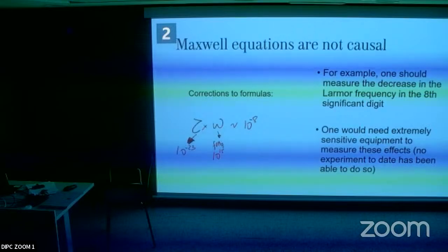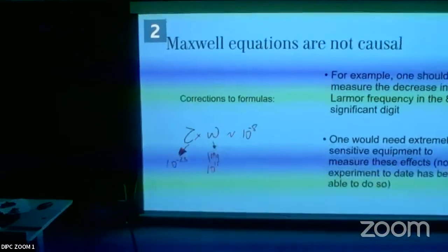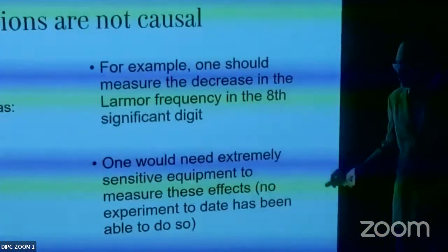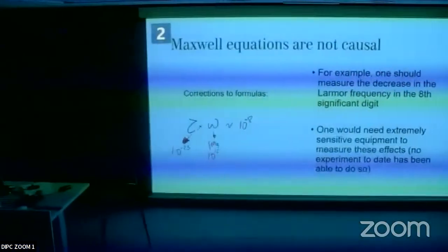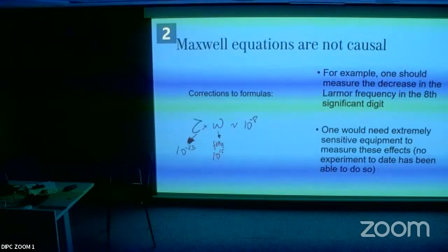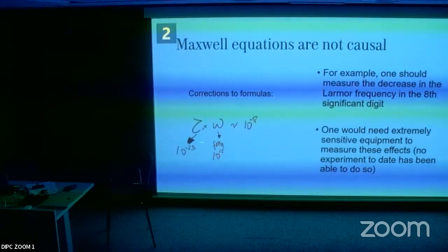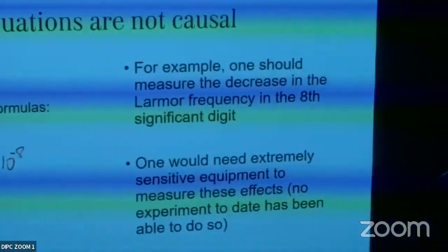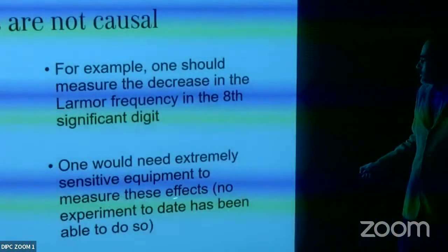No one has been able to measure these non-causal relations or runaway solutions — they are so slow that this is called micro-causality. Maxwell's equations are causal for macroscopic things but not for microscopic ones. This phenomenon is called micro-causality.